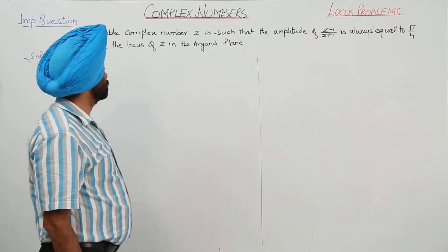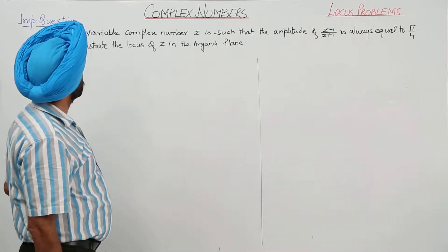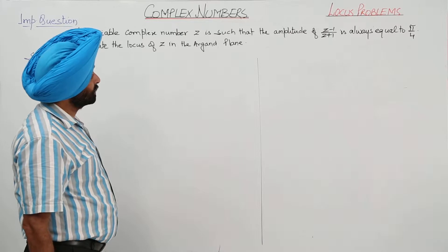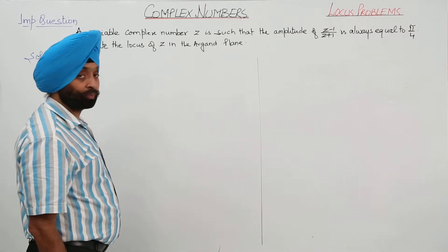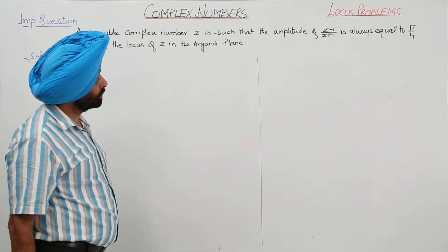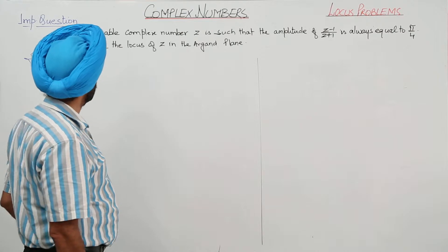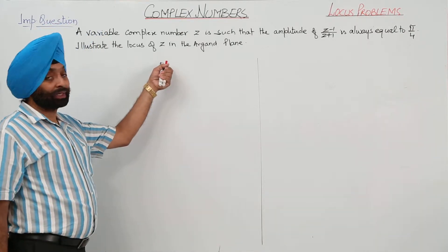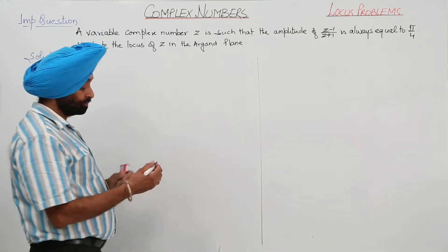Important question on a locus. A variable complex number z is such that the amplitude of (z minus 1) upon (z plus 1) is always equal to π/4. Illustrate the locus of z in the Argand plane.